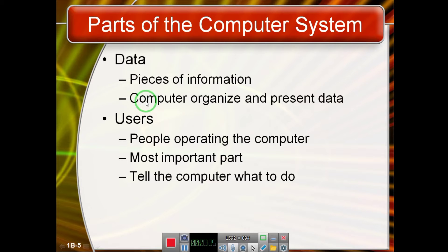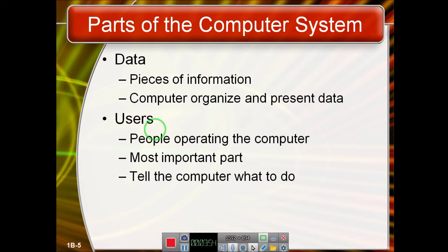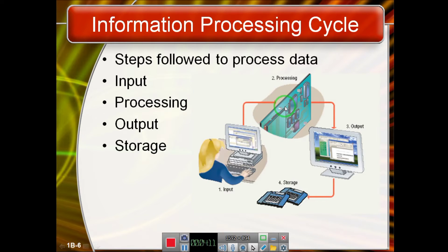Data is raw facts and figures provided by the user, and the computer is supposed to transform that data into information. A user could be a human or it could be another computer, since one computer can also provide data to another. The user provides instructions, commands, or data to the computer; that data is then fetched by the software, which drives the hardware.